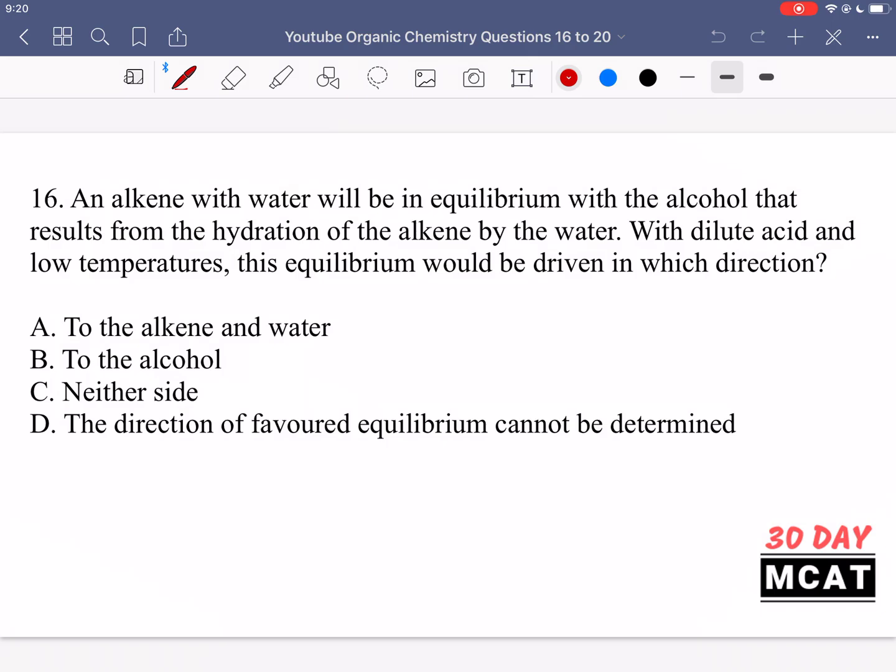So first of all we know that there's an equilibrium and the equilibrium process taking place is hydration of an alkene by water. So what that looks like is if I have an alkene like this plus water that goes towards the alcohol.